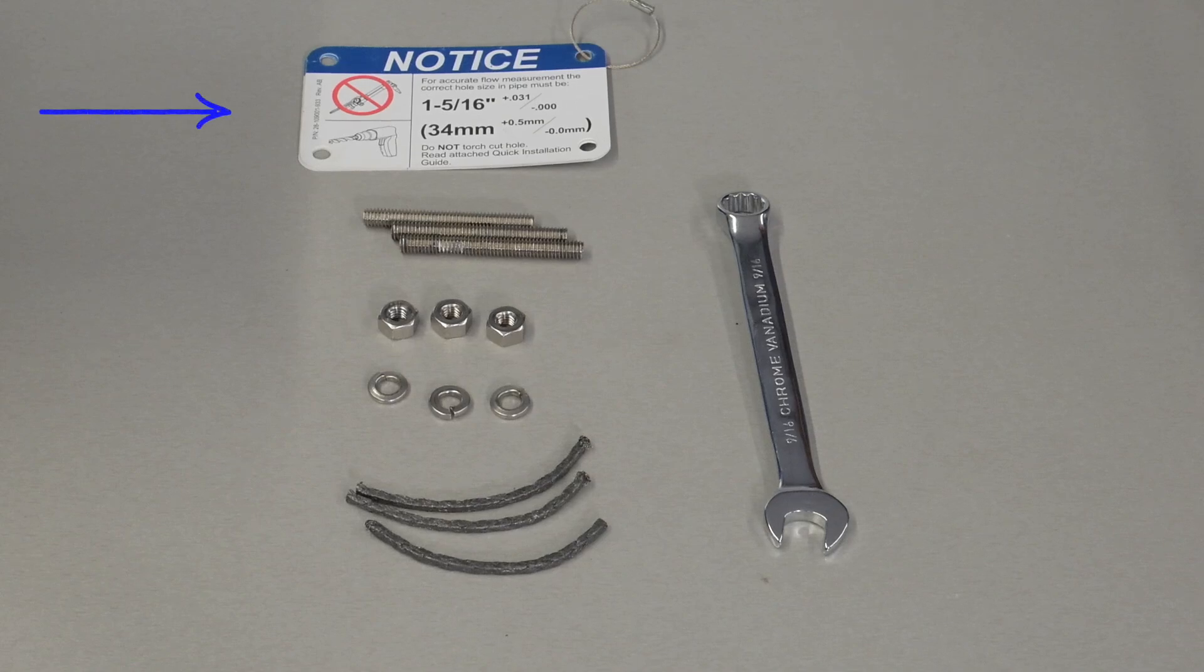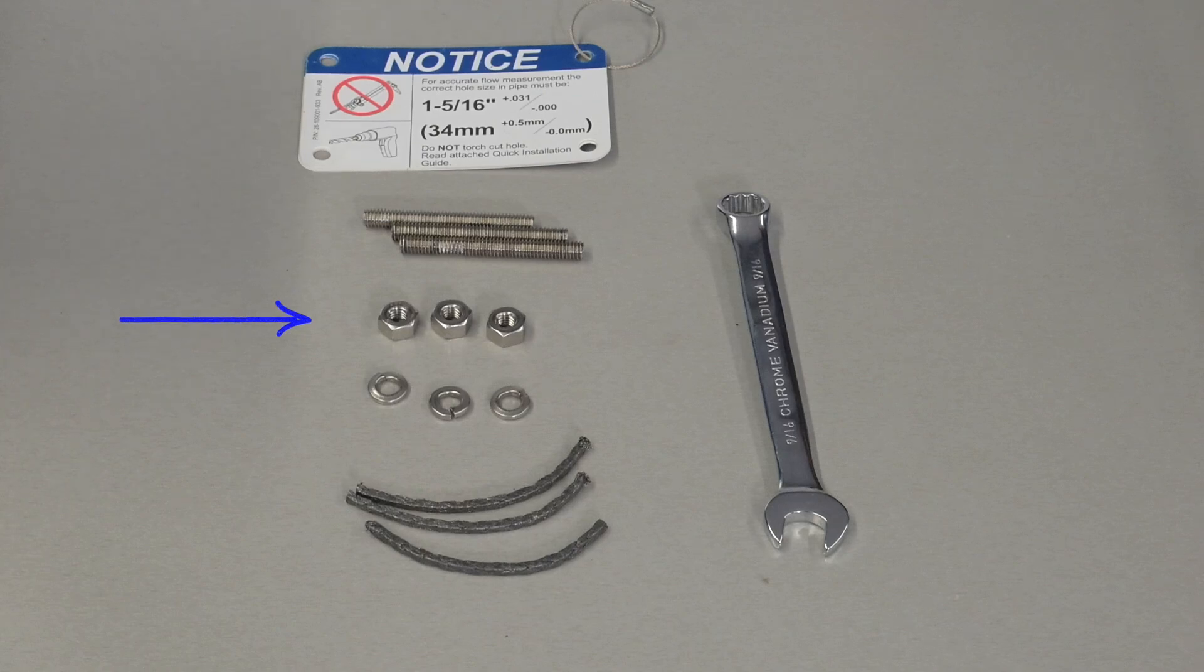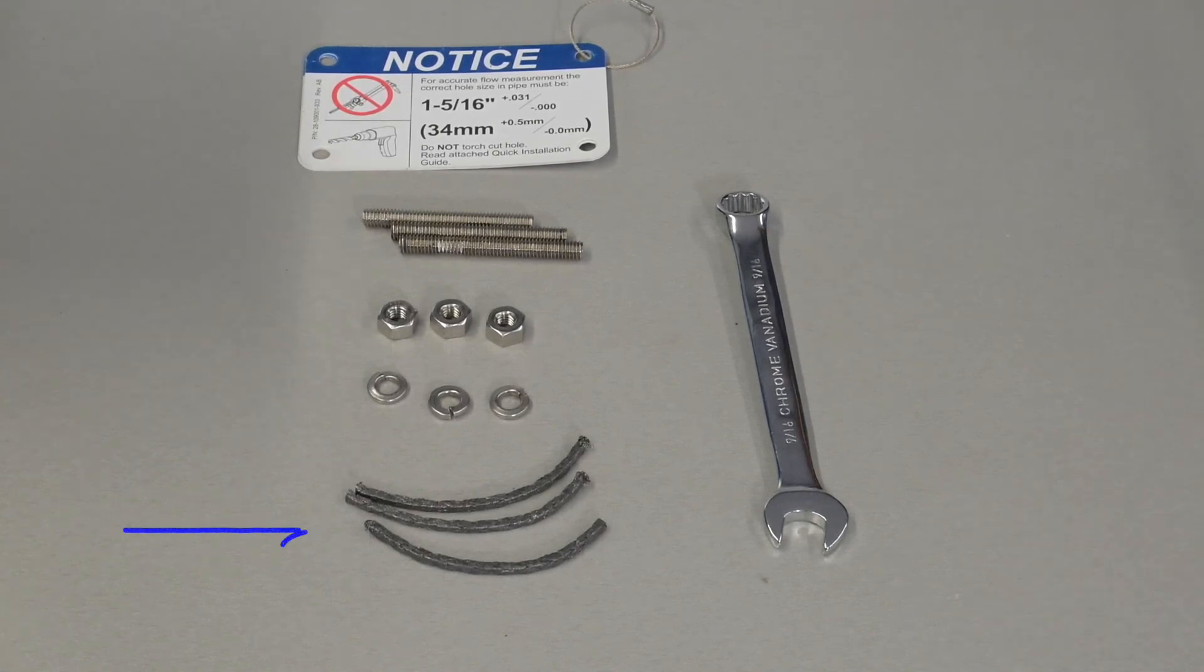First, confirm that you have all of your equipment: hole size tag, three 5-16th pack lock studs, three 5-16ths nuts, three split ring lock washers, and three packing rings.